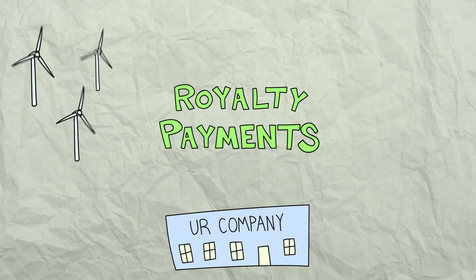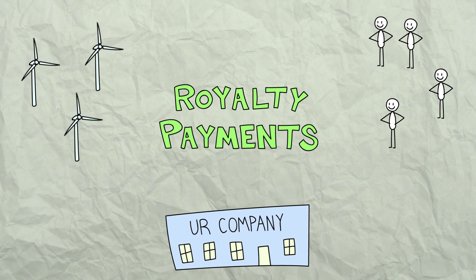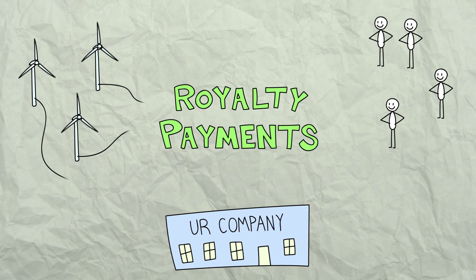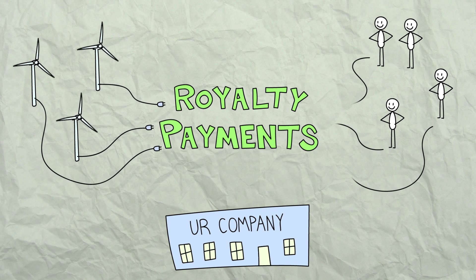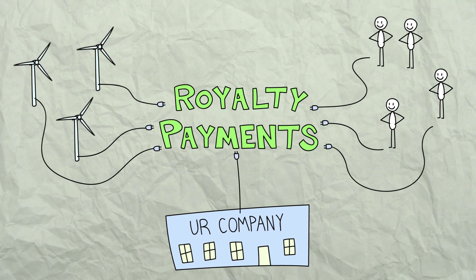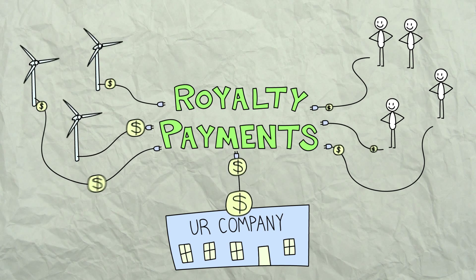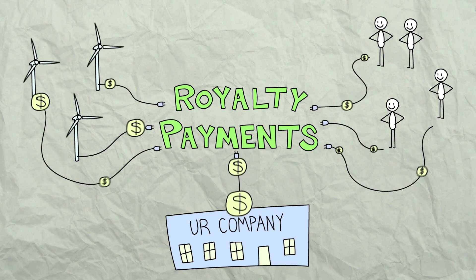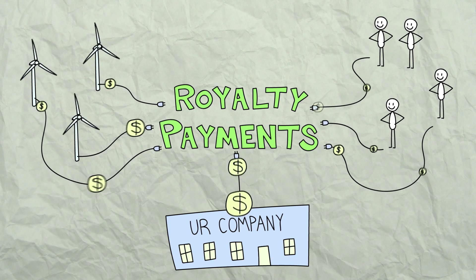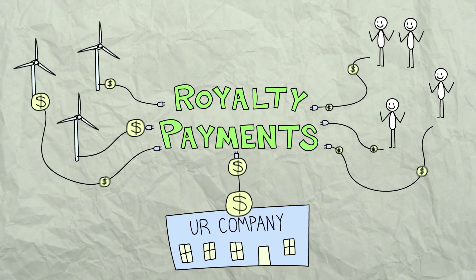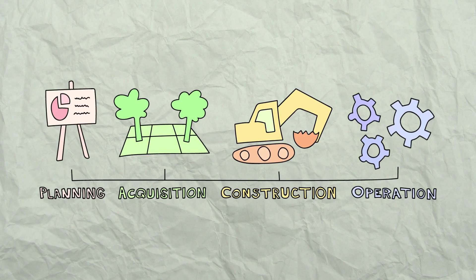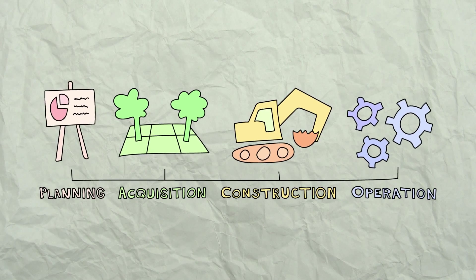Like royalty payments — simply set up who gets paid, what, and when, then have GeoAmps automate the process, making sure everyone gets paid accurately and on time. This helps keep clients happy.